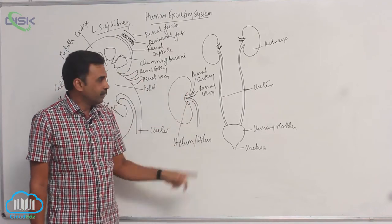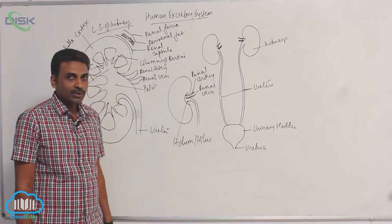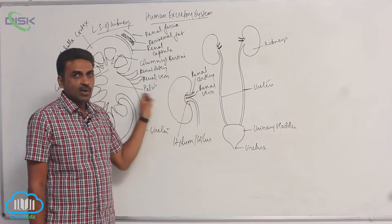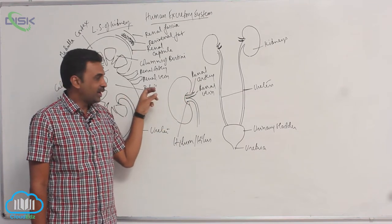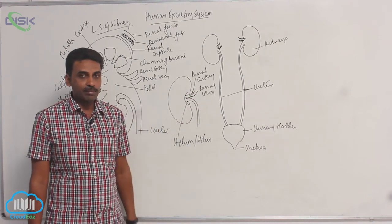At the region of hilum, you can see renal artery is entering and renal vein is coming out. Renal artery takes oxygenated blood inside. Renal vein is bringing out deoxygenated blood.